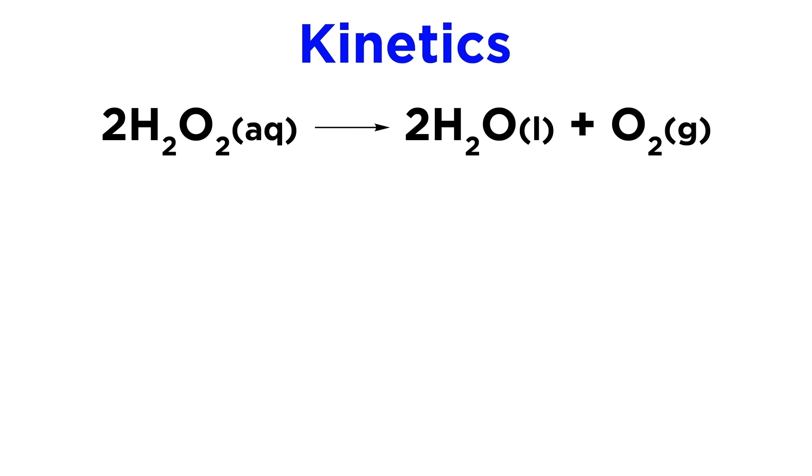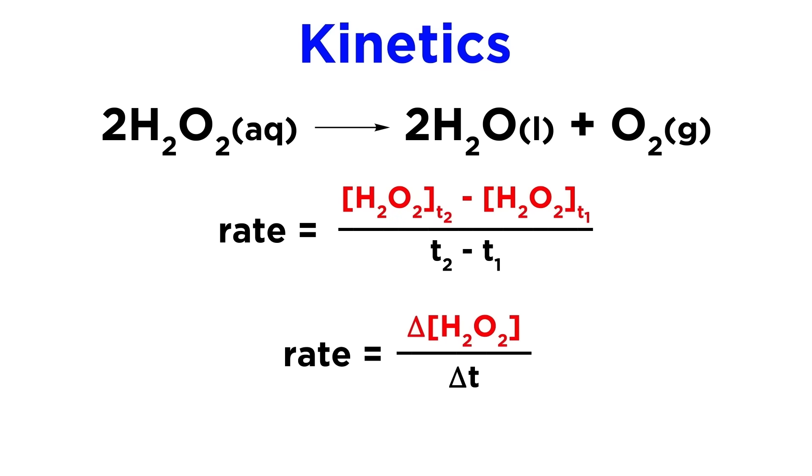For this decomposition of hydrogen peroxide, we can calculate the final concentration minus the initial concentration, giving us the change in concentration, and divide by time two minus time one, which is the change in time, to get this expression. This is the rate expression. Remember, brackets signify concentration, and delta, which is the Greek letter that looks like a triangle, means change in. So change in concentration over change in time.